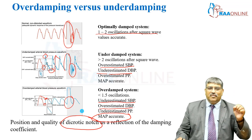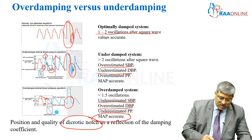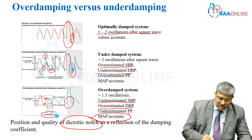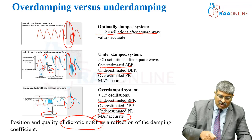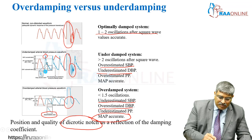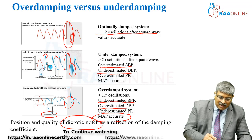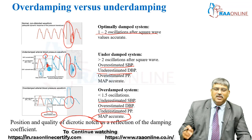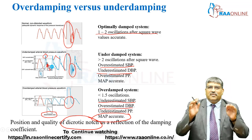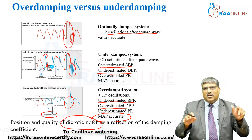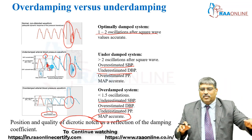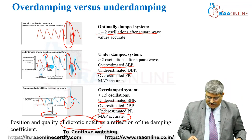You can also identify under-damping and over-damping using the dicrotic notch. In over-damping, there is an absent dicrotic notch — here you can see no dicrotic notch. In under-damping, you can see a deep dicrotic notch. So with the dicrotic notch, you can determine whether the system is under-damped or over-damped.